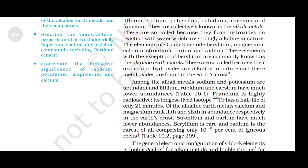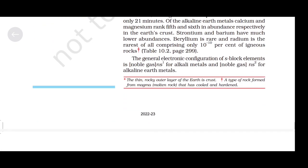Among the alkali metals, sodium and potassium are abundant, while lithium, rubidium and caesium have much lower abundance. Francium is highly radioactive; its longest-lived isotope 223Fr has a half-life of only 21 minutes. Of the alkaline earth metals, calcium and magnesium rank 5th and 6th in abundance respectively. Beryllium is rare and radium is the rarest, comprising only 10⁻¹⁰ percent of igneous rocks. The general electronic configuration is [noble gas] ns¹ for alkali metals and [noble gas] ns² for alkaline earth metals.